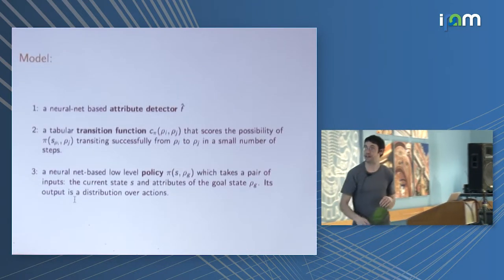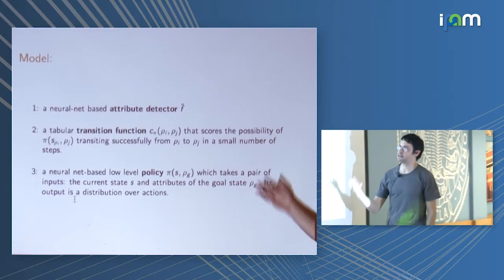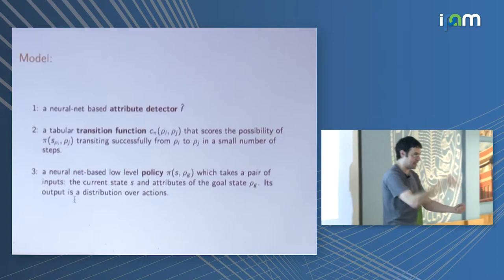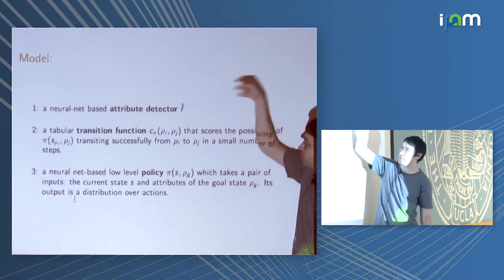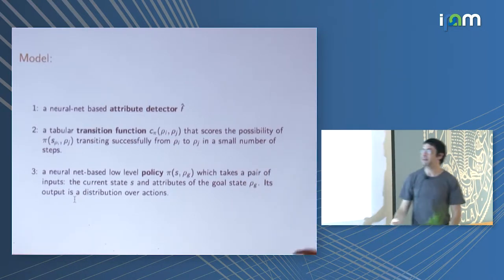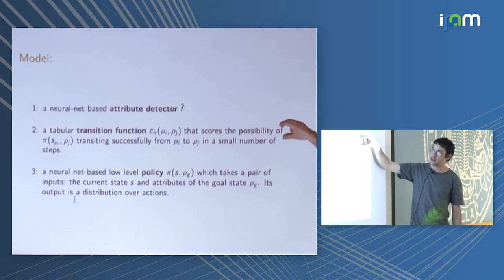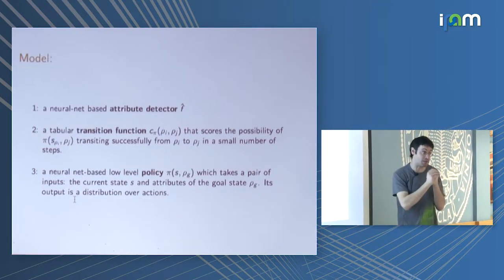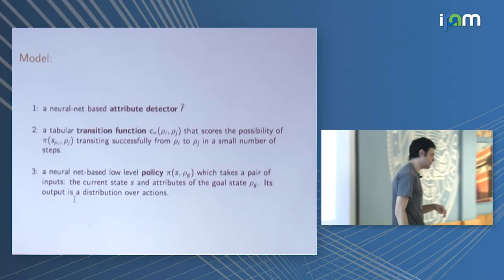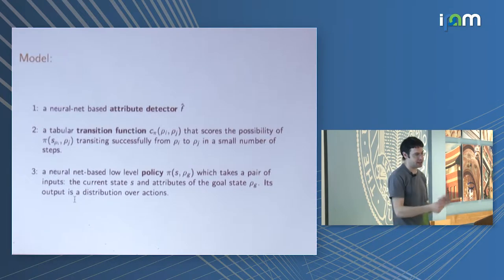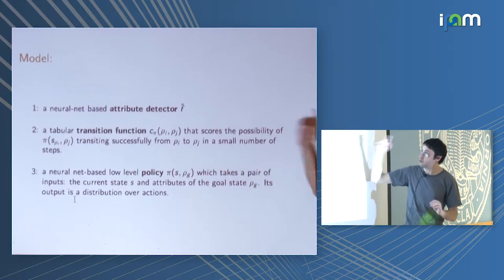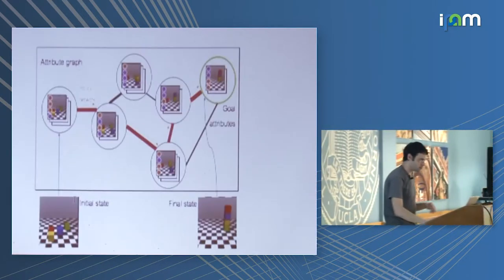Let's write down the model. It has three parts. First is the attribute detector: it eats a state and outputs attributes. This is trained supervised with state-attribute pairs. Second is the graph: it represents how I can get from this set of attributes to that set of attributes. Third is the low-level policy: what actions do I take to get from my current state to this set of attributes that are local — close to where I am now. The only thing trained with supervision is the attribute detector.